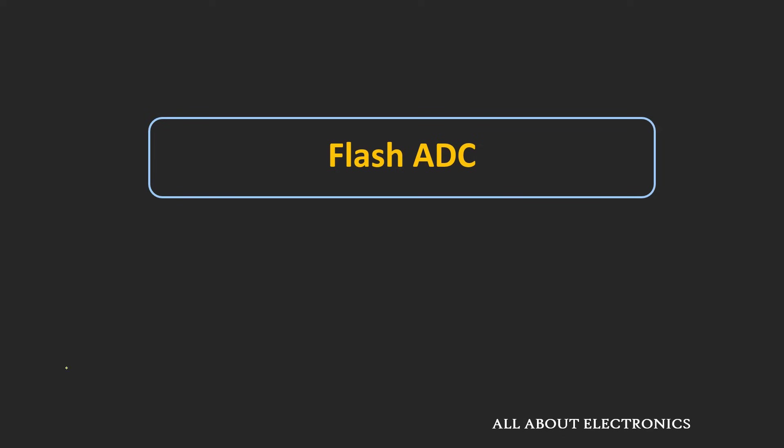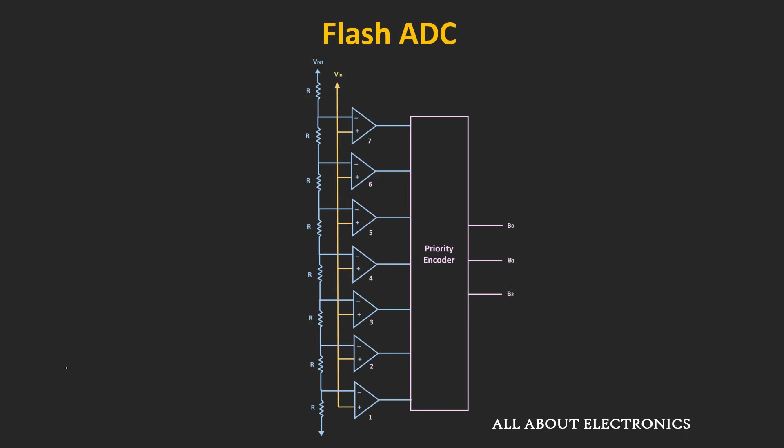This Flash ADC is the fastest among all other ADCs. If you see the typical block diagram of this Flash ADC, it consists of high-speed comparators, a resistive voltage divider circuit, as well as an encoder.